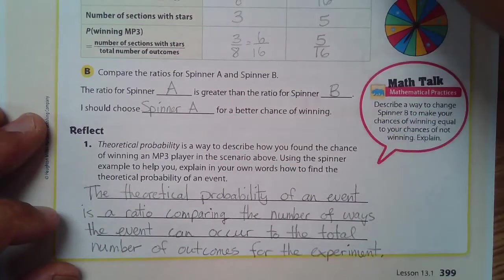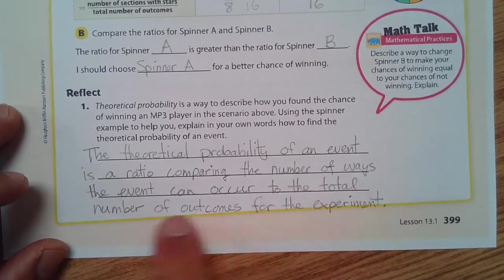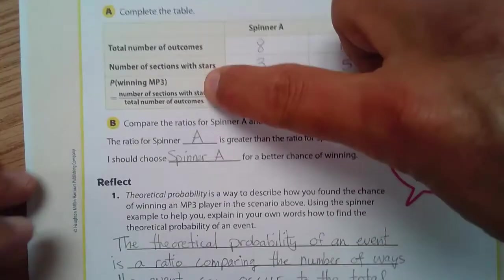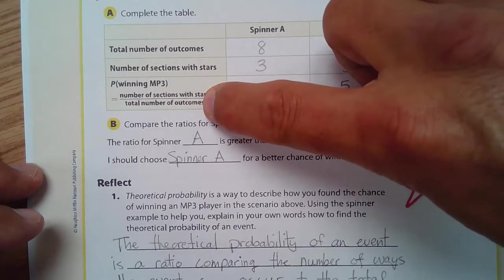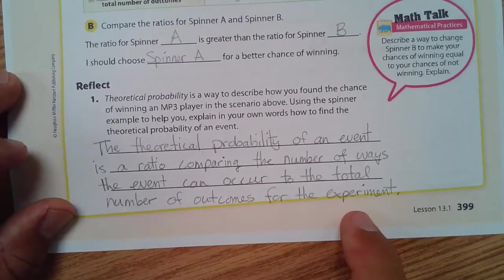Well, in my words, the theoretical probability of an event is a ratio comparing the number of ways the event can occur, so the number of ways the event can occur divided by the total number of outcomes to the total number of outcomes for the experiment.